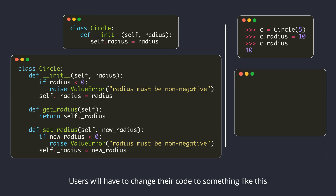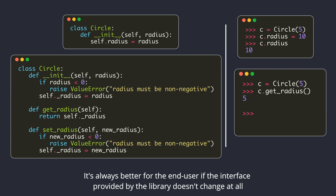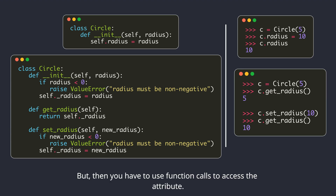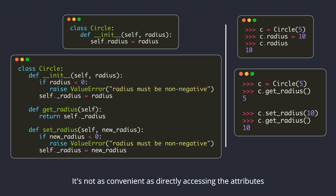Users will have to change their code to something like this. It's always better for the end user if the interface provided by the library doesn't change at all. You may think of always starting with getter and setter methods even if we don't have any validations to be performed, but then you have to use function calls to access the attribute, which is not as convenient as directly accessing the attributes.